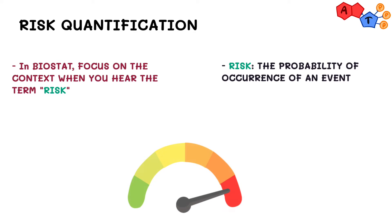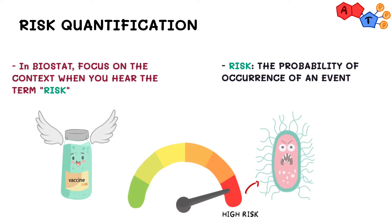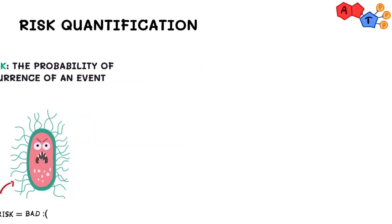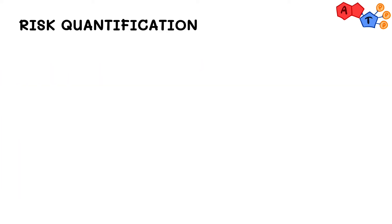For example, a high risk to contract a terrible disease is bad. It's always important to consider the context. So now the question is, how can we know if risk is high or low? Well, we can quantify it.